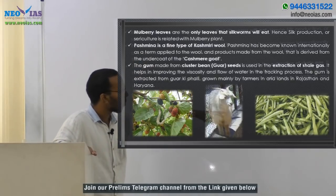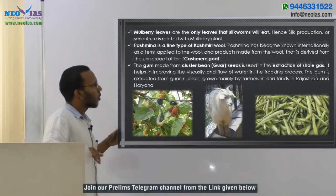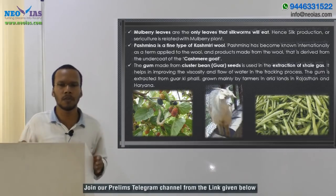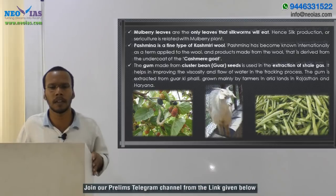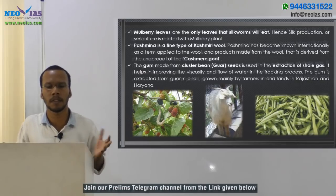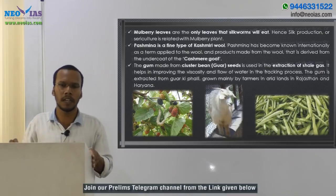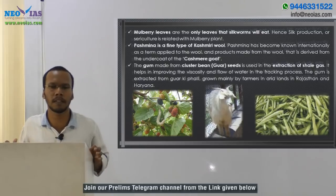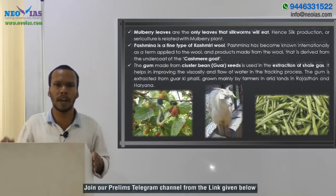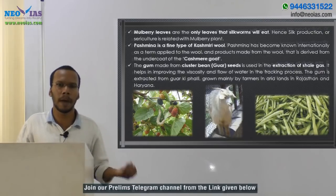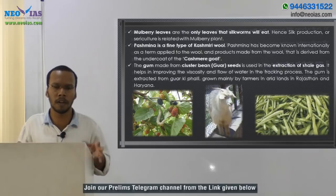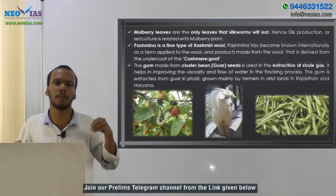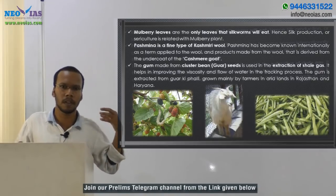You can see the cluster bean image here. This cluster bean is mainly used to produce a gum known as guar gum, which is mainly used in the production of shale gas. The US is the leading country in producing shale gas, and to produce shale gas requires a sophisticated mechanism called hydraulic fracking. Guar gum is required for this hydraulic fracking in order to improve the viscosity of the liquid used in the process.